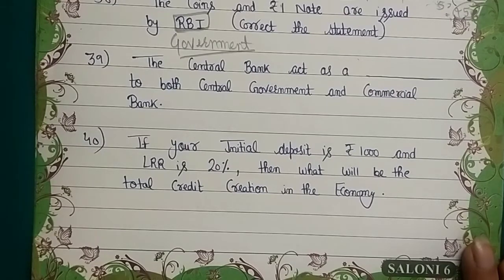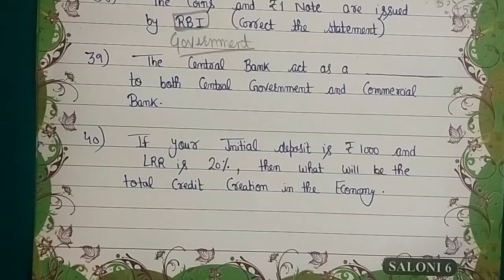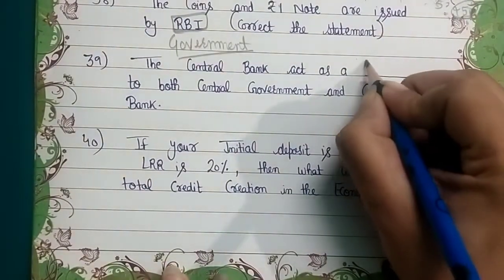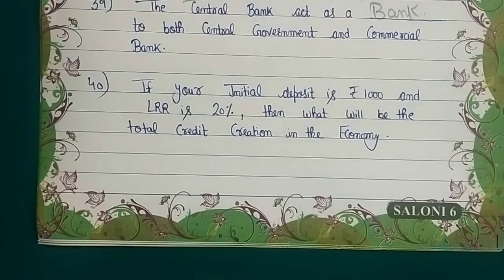Question 39: 'The central bank acts as a dash to both central government and commercial banks.' If you have studied the functions of RBI, you know it has the sole right to issue notes, it is the lender of last resort, it controls credit, it is a banker's bank, and it is the government's bank. So RBI acts as a bank to both — it does banking work for the government and for commercial banks, including making payments on their behalf, giving loans when needed, and providing financial advice. RBI does all this work.